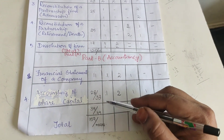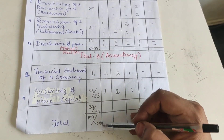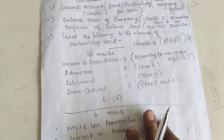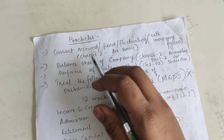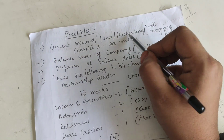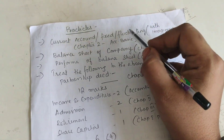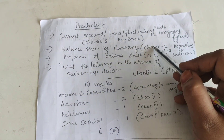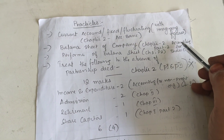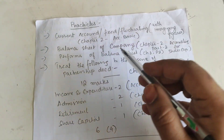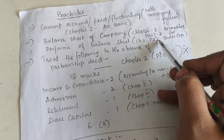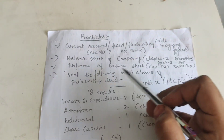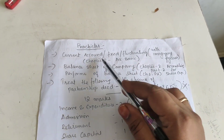Overall there will be 159 marks, and we need to achieve 100 marks. For practicals, the current account or fixed/fluctuating account with any imaginary figures will surely be asked — this is from Chapter 2. The balance sheet of a company will be asked from Accounting for Share Capital. The proforma of balance sheet will be asked from Part 2, Chapter 3 — Financial Statements. Also, 'treat the following in the absence of a partnership deed' are important practical questions.